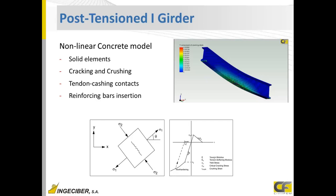For tension, when stress reaches the cracking stress there is a softening modulus until the tension stress reaches zero. Under loading and unloading cycles there is an intermediate elastic modulus in that zone until the strain is large enough that the crack is completely open and there is no stress.